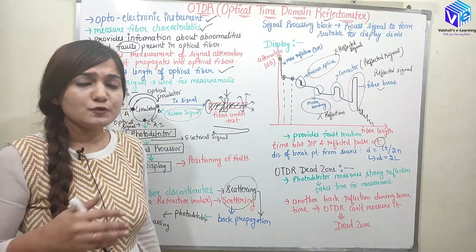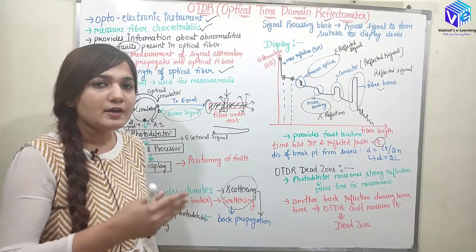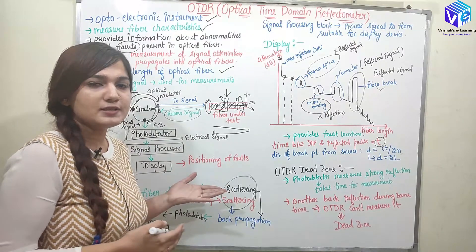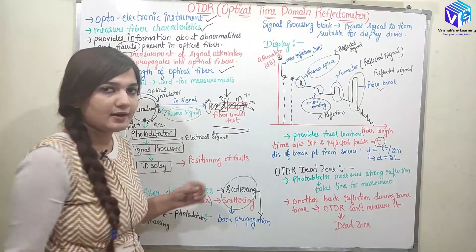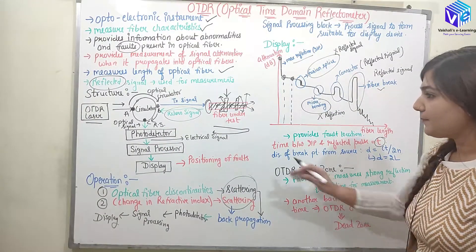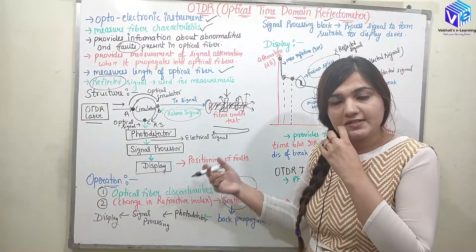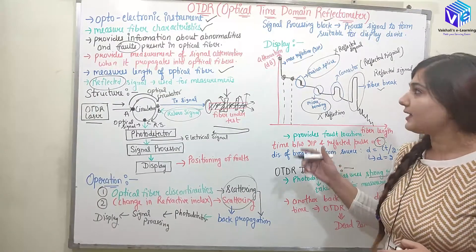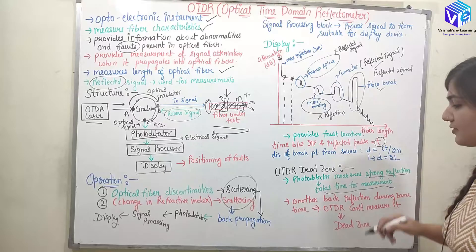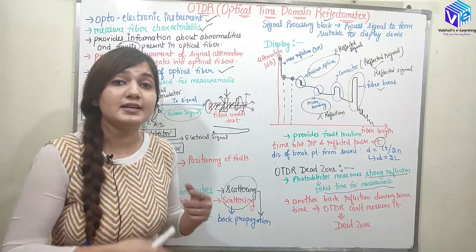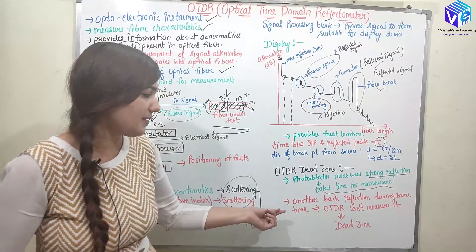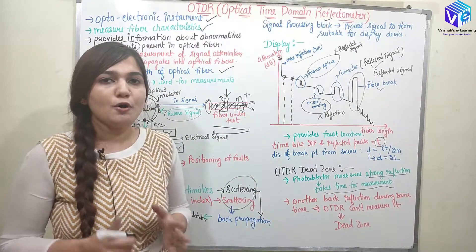The OTDR dead zone is the area where closely spaced faults cannot be individually resolved. If two connectors are very closely spaced, I can locate the first connector but not the second. This is because the photo detector, being a semiconductor, takes time to measure the strong reflection from the first connector, and if another reflected signal arrives during that measurement time, the OTDR cannot measure it — this is the dead zone.